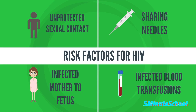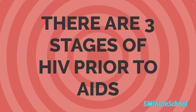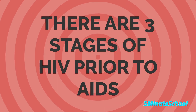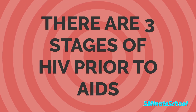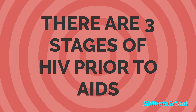The risk factors of HIV include unprotected sexual contact, sharing needles, the passage of the virus from an infected mother to the fetus, and infected blood transfusions. There are three stages of HIV prior to AIDS, which we're going to talk about in today's video.